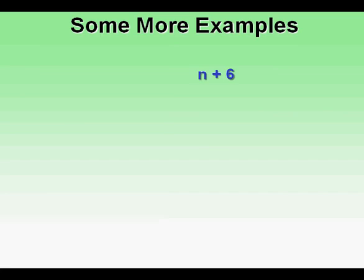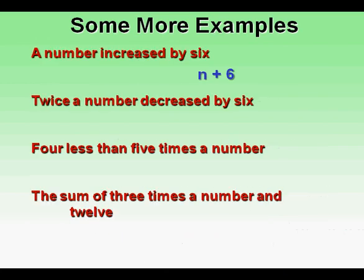Twice a number decreased by 6. This translates to 2n minus 6.